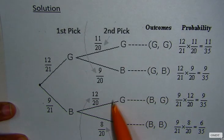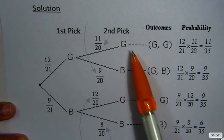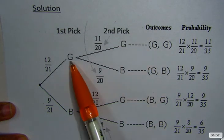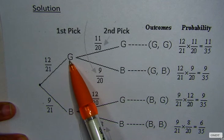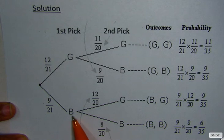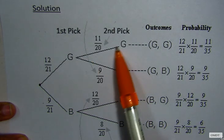Then the second time he picked, he could pick either a green or a blue if he had picked a green the first time. And he could also pick a green or a blue if he had picked a blue marble the first time. Let's look at the probabilities on the branches.